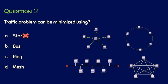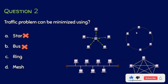In bus topology, all nodes share the common transmission medium, and it is bidirectional communication, so there is a traffic problem — bus is not the answer either. In ring topology, it is unidirectional communication and all traffic flows in one direction only. If a device needs to send data to another, it must follow the ring direction, so traffic problems cannot be minimized using ring topology.